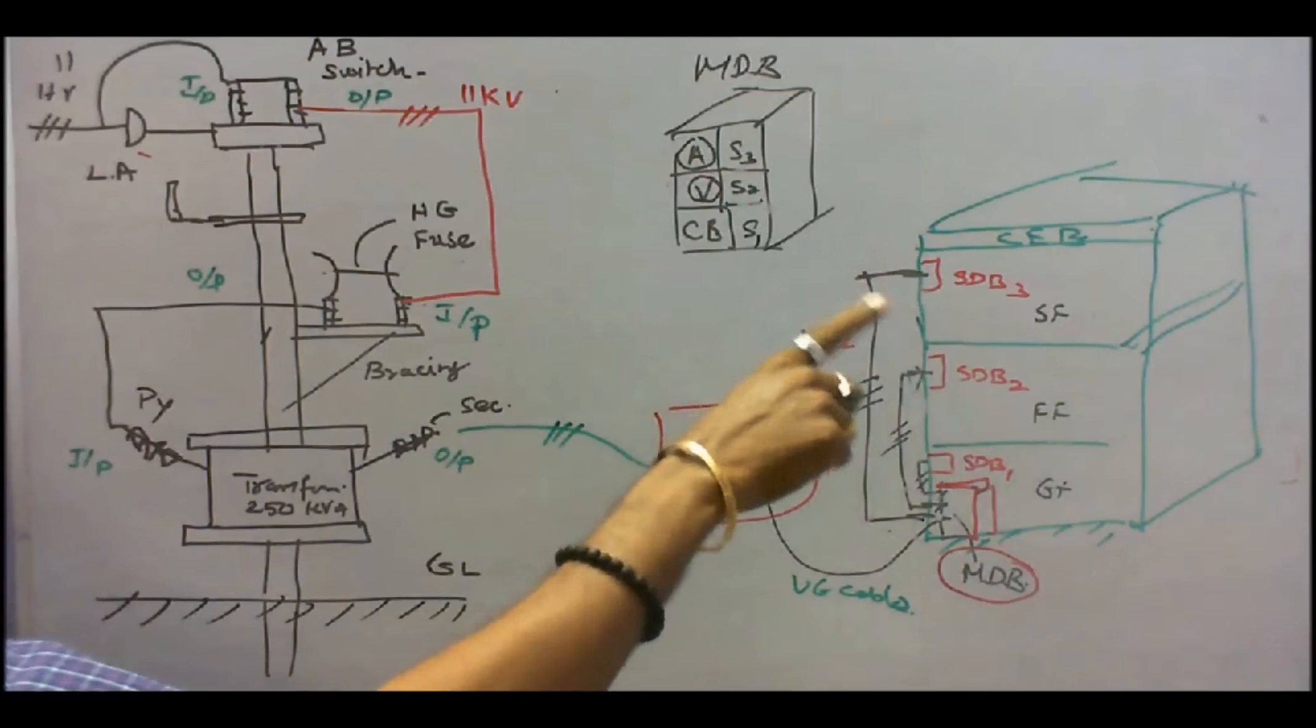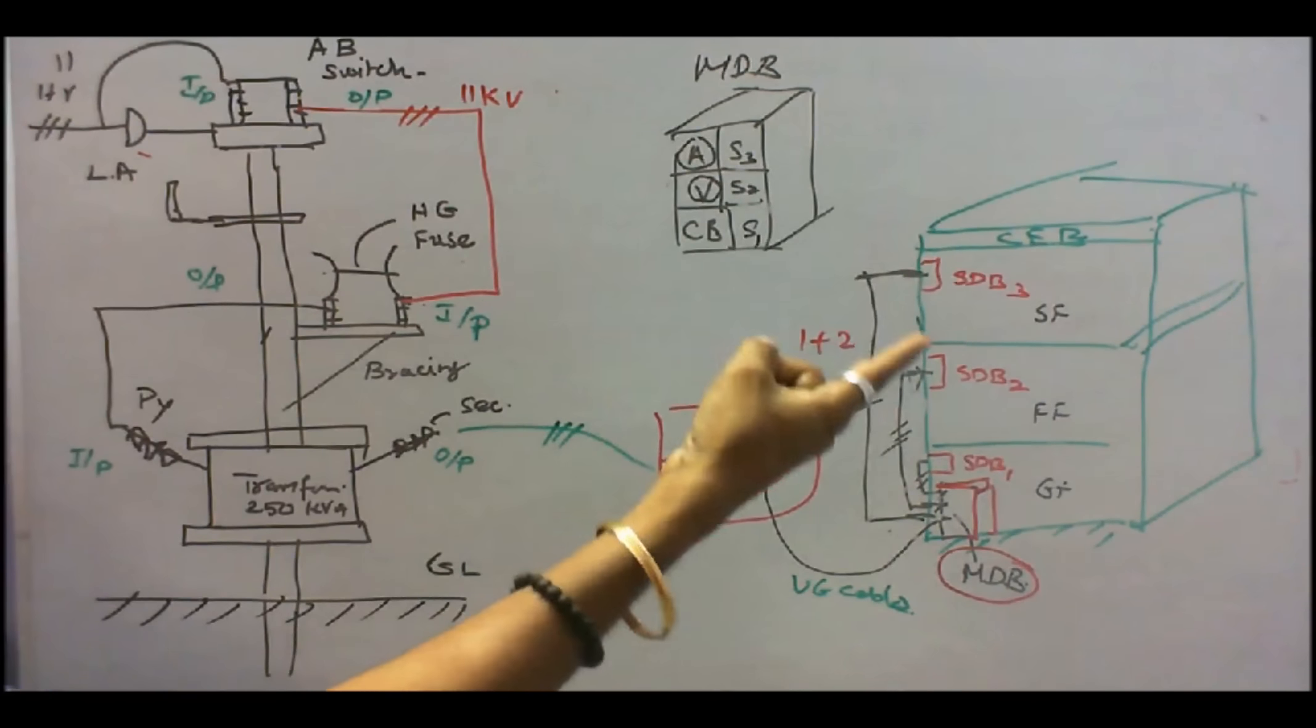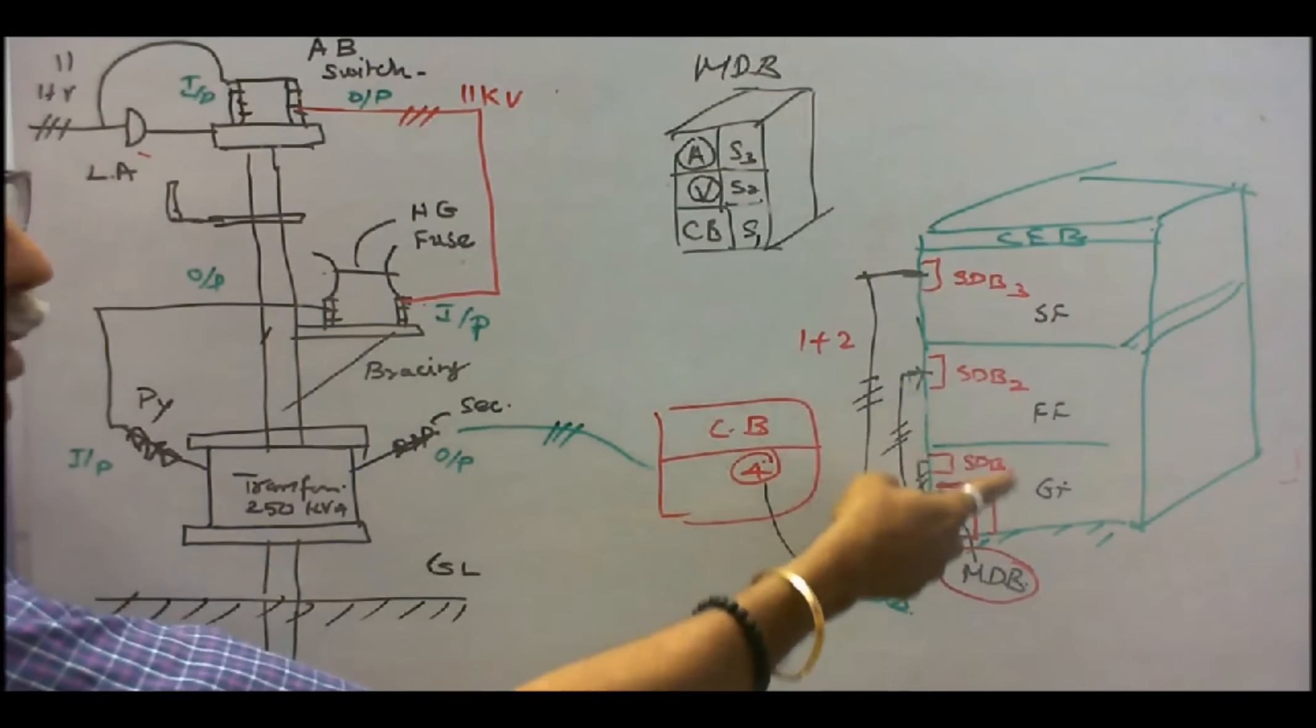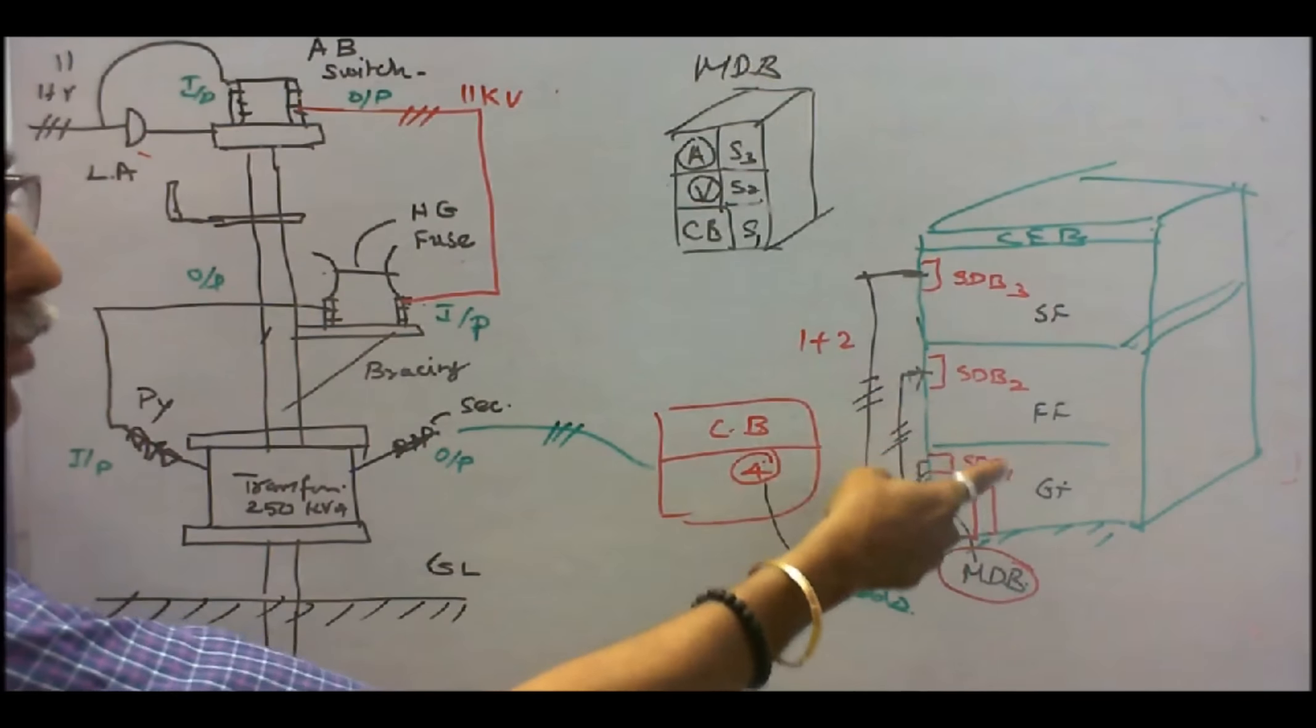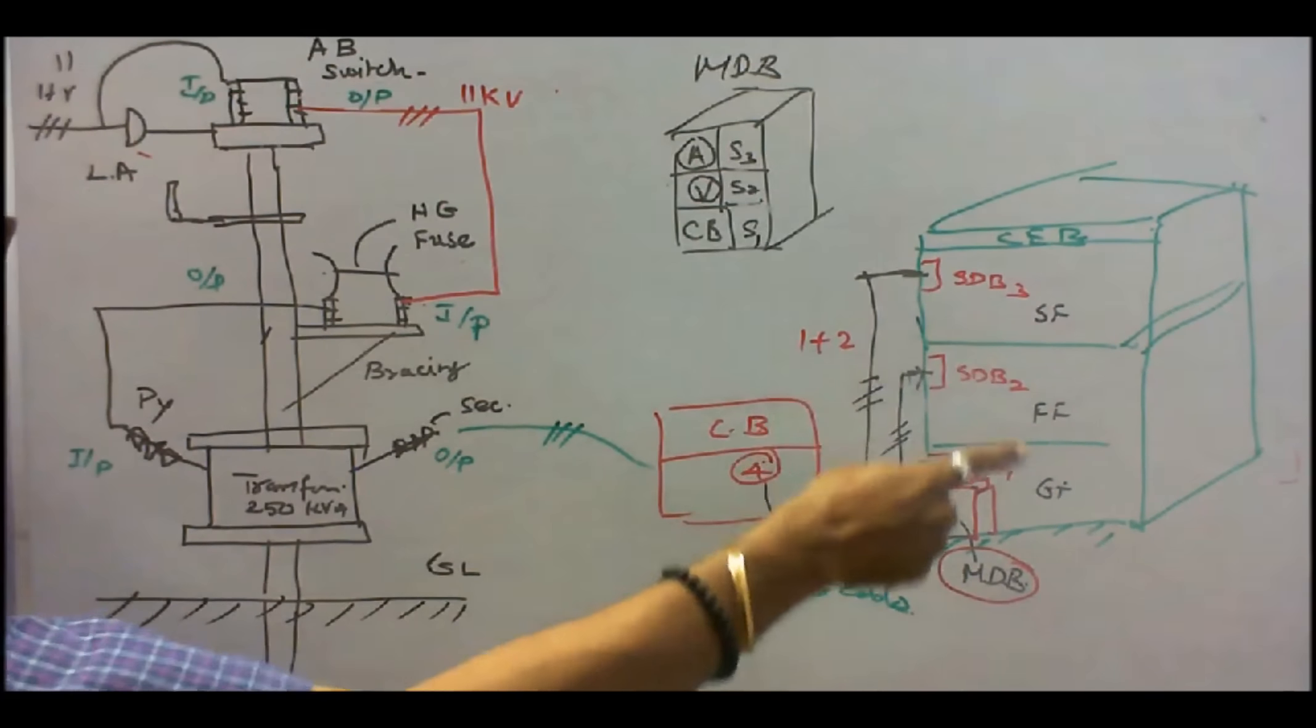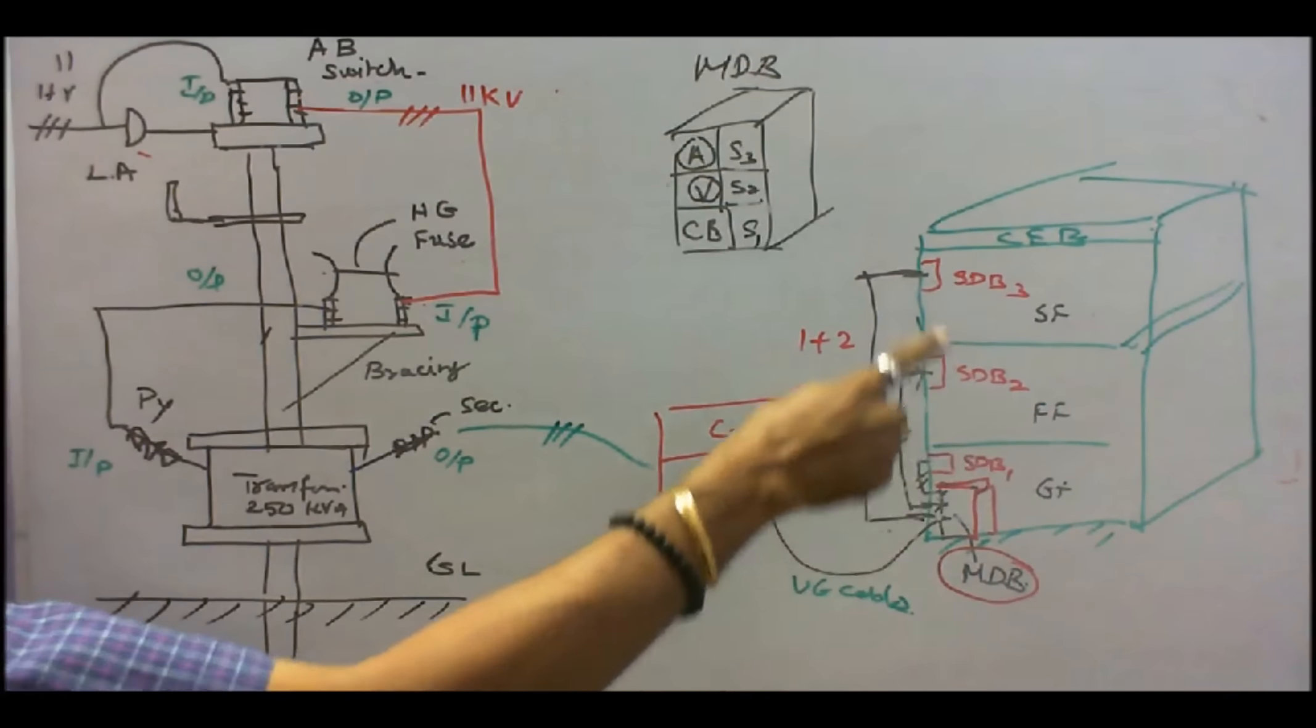All the SDBs are connected through MCBs, miniature circuit breakers. That fault will not be reflected in the first floor or second floor. Power will be available in the first floor as well as second floor. If any fault occur here, the total power will not be available here.